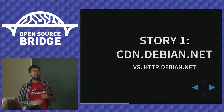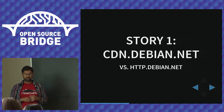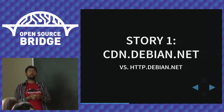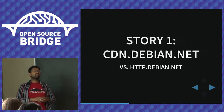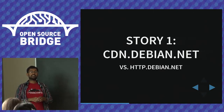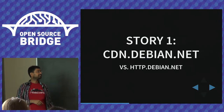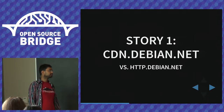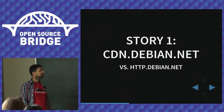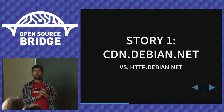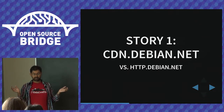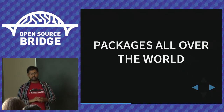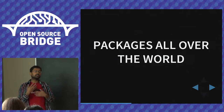The first story is about cdn.debian.net. In Debian, we mirror all 56,000 packages all over the world so there's a mirror near you. Fun fact: servers closer to you generally provide faster downloads. In the Debian installer, there's a default mirror — ftp.debian.org — and users are asked to choose a country-specific mirror like ftp.us.debian.org or ftp.be.debian.org.